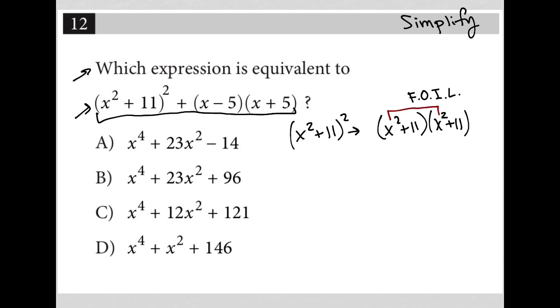So if we multiply the two first terms, x squared times x squared, I get an x to the fourth. We multiply the two outer terms, x squared times 11, I get a plus 11x squared. Do the same thing for the two inner terms, I get another 11x squared. And for the two last terms, 11 times 11, I get 121.